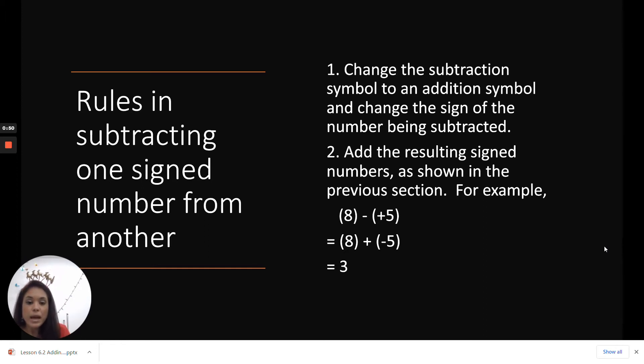So if we have 8 minus positive 5, we're going to change the minus to an addition sign, and then we change this positive to a negative sign. So we take the absolute value of 8 and subtract the absolute value of 5. 8 minus 5 is 3.